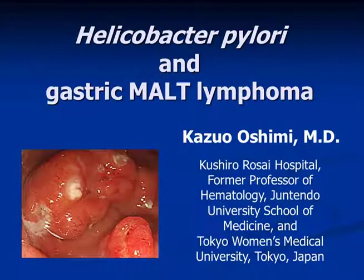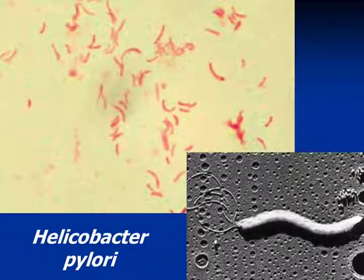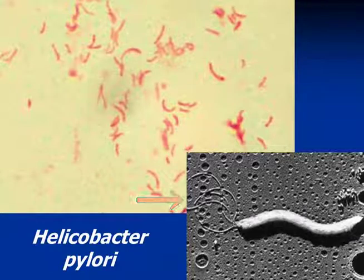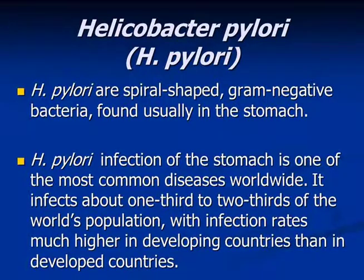Let me start the first lecture. These are H. pylori on electron microscopy. This H. pylori has some flagella that are important for motility and chemotaxis. H. pylori are spiral-shaped gram-negative bacteria found usually in the stomach.